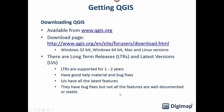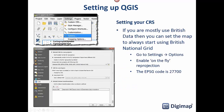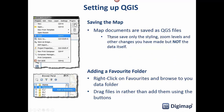Once you've got QGIS on your machine you can set it up to make things easier. Since most Digimap data is in British National Grid — only Marine Digimap provides data that isn't — it's worth going into Settings > Options and setting your default coordinate reference system to British National Grid. That way every time you open QGIS it's ready to go. You can filter the CRS using the EPSG code, which is 27700 for British National Grid.